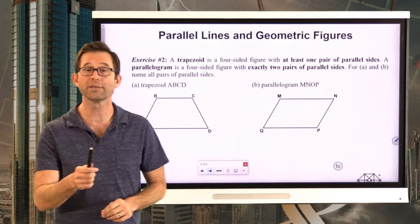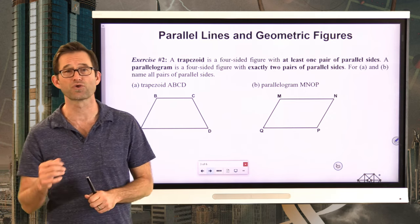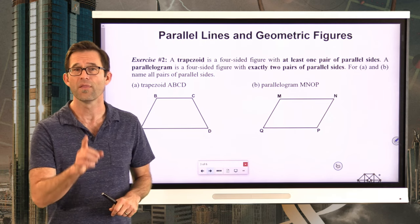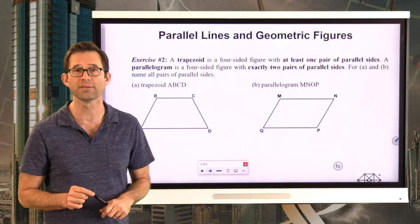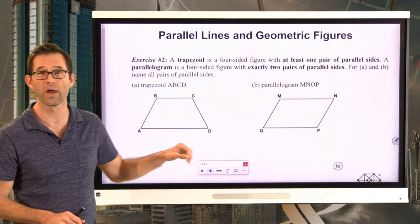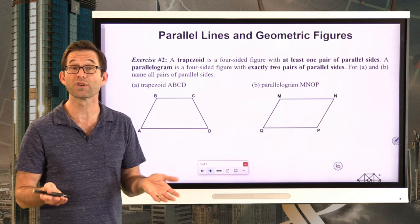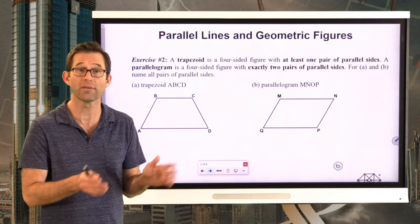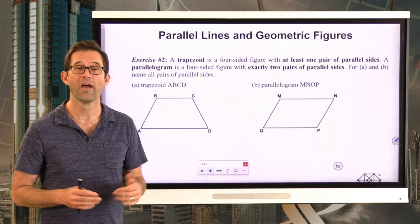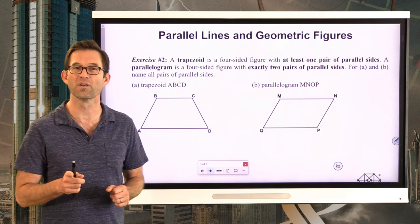Parallel lines and geometric figures. There are lots of geometric figures you've learned about in the past — things like trapezoids, parallelograms, rectangles, triangles, squares — that might have pairs of sides that are parallel to each other. Keep in mind that when you talk about something like a trapezoid or a parallelogram, all of the sides are segments, not lines. But two segments can be parallel as long as the lines on which they lie are parallel. Let's take a look at exercise number two.